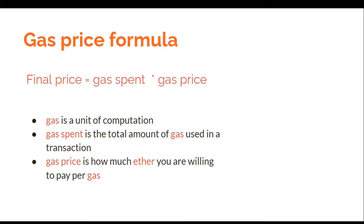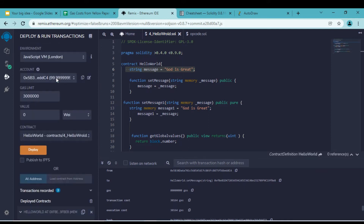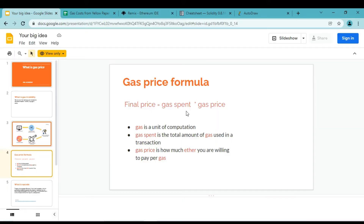Gas spent is nothing but the total amount of gas used in the transaction, which we multiply by the current price of gas. That gives us the final price, which is what we already paid from our fake account.